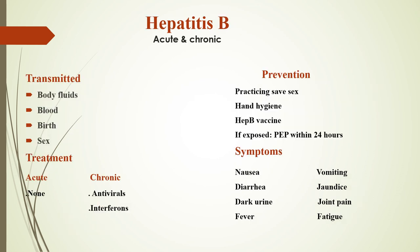Hepatitis B can be acute or chronic. It is transmitted by body fluids, blood, birth, or sexual activities. The treatment for acute is just recovering on your own, and for chronic, they have antivirals and interferons. The prevention for hepatitis B is practice of safe sex, hand hygiene, and the hepatitis B vaccine. If exposed, you can have prophylaxis within 24 hours.